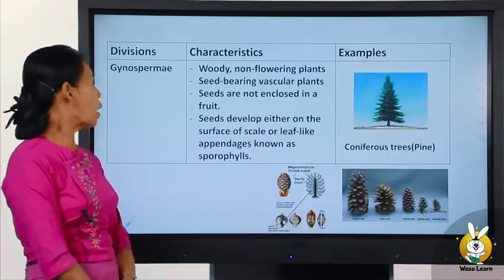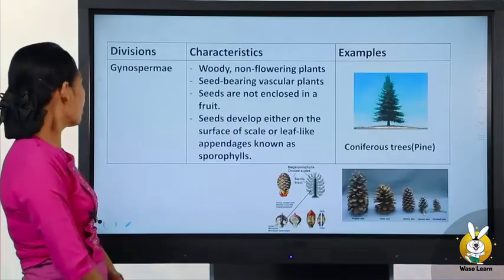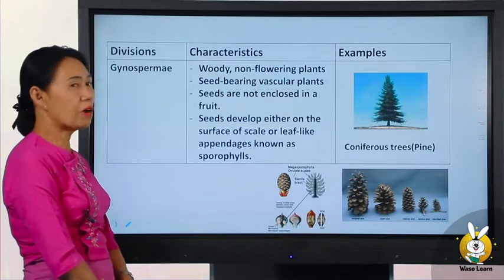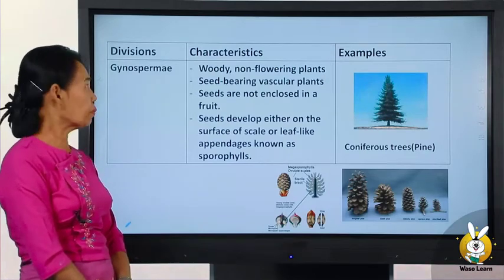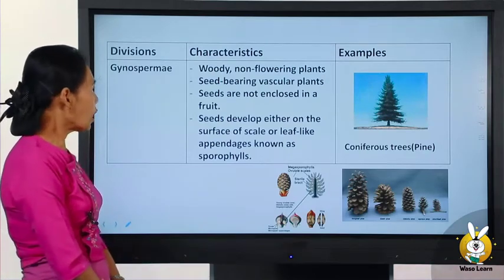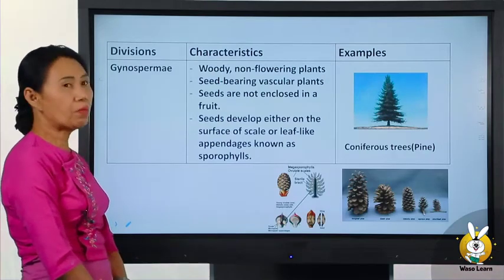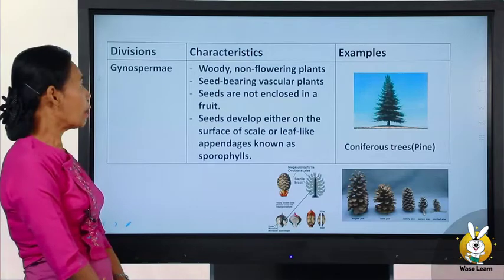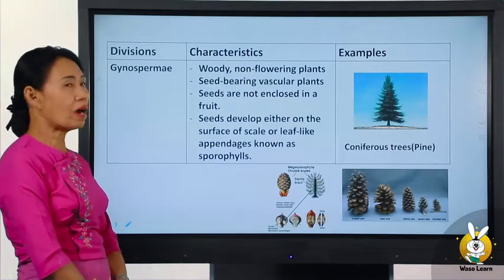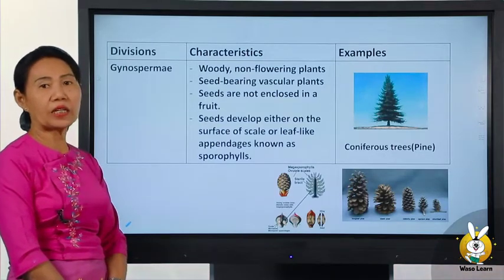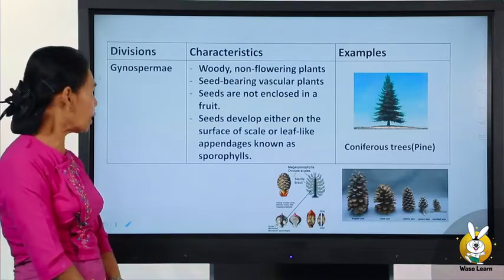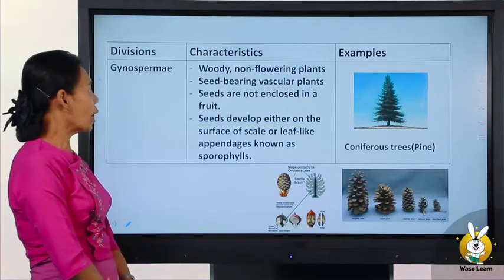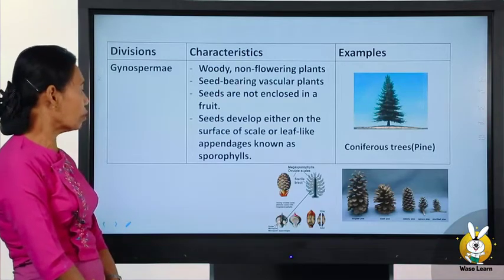Gymnosperms are rooty, non-flowering seed-bearing vascular plants. This is the first group of seed-bearing plants. Seeds are not enclosed in the fruit.